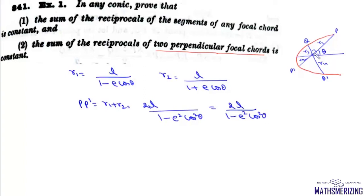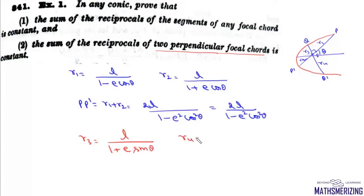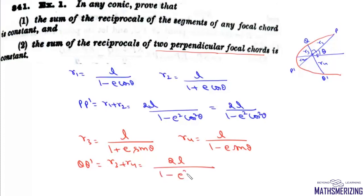Similarly we find QQ'. For R3, the angle is θ + π/2, and since cos(π/2 + θ) = −sinθ, we get R3 = L/(1 + E·sinθ) and R4 = L/(1 - E·sinθ). Adding them gives QQ' = R3 + R4 = 2L/(1 - E²·sin²θ).